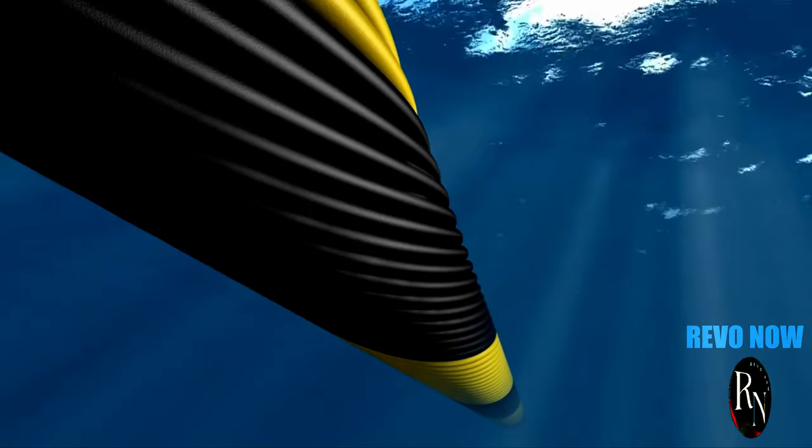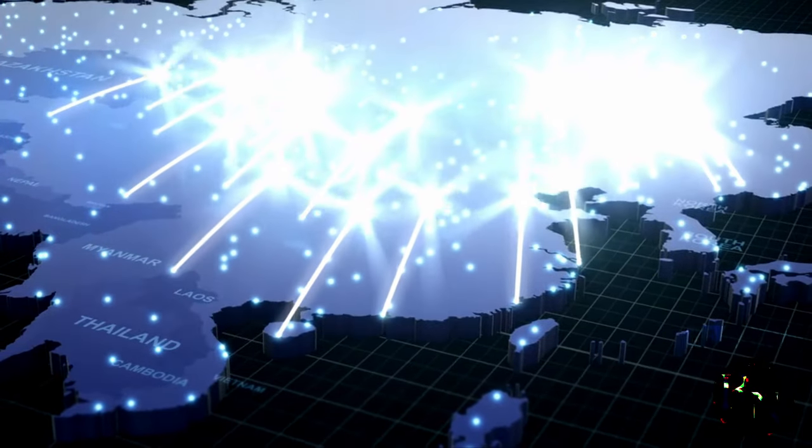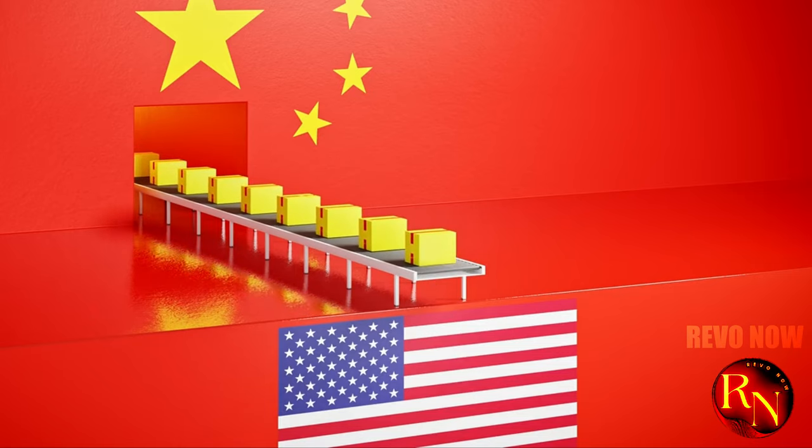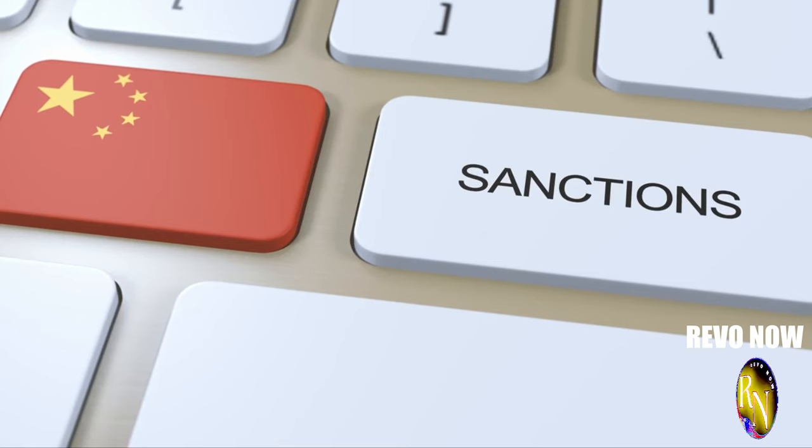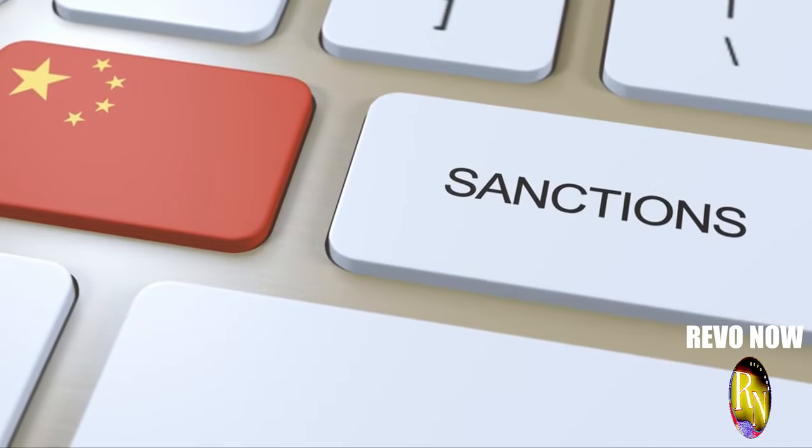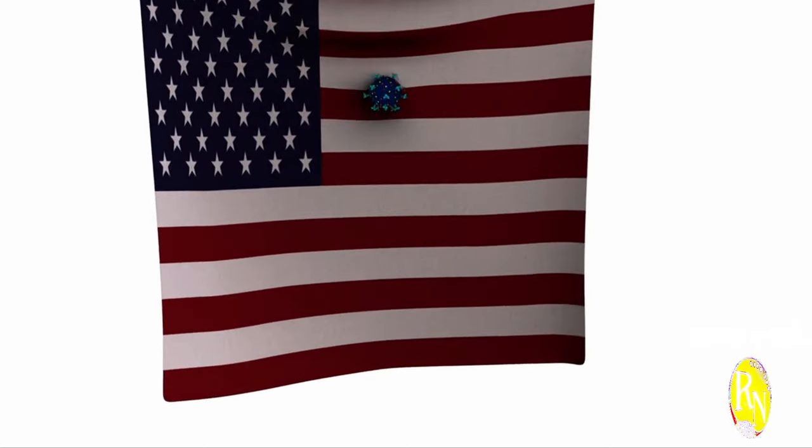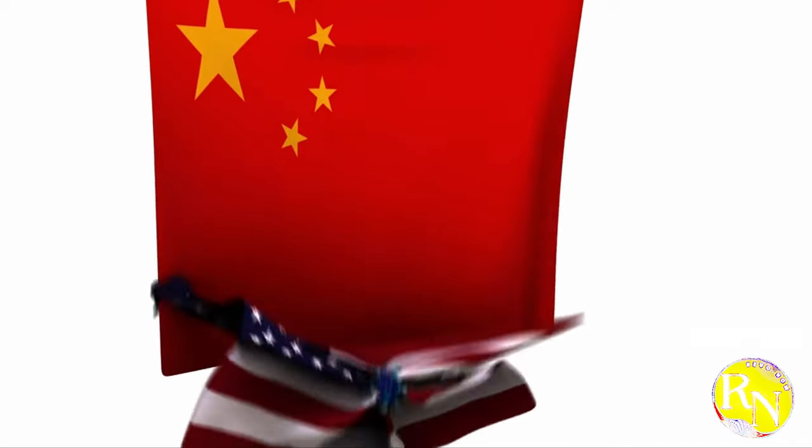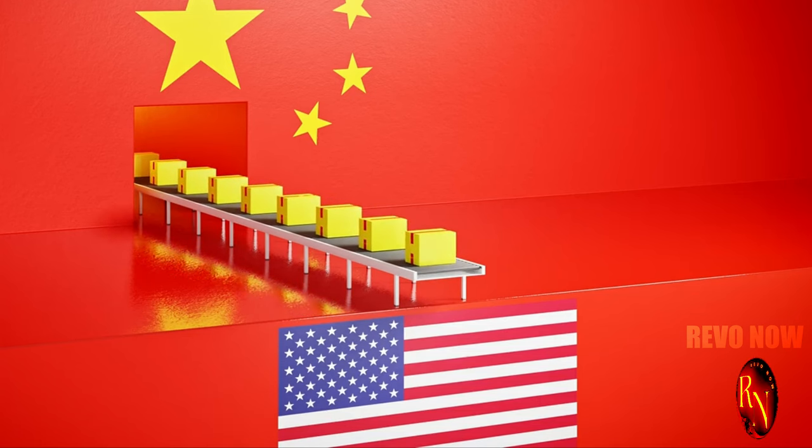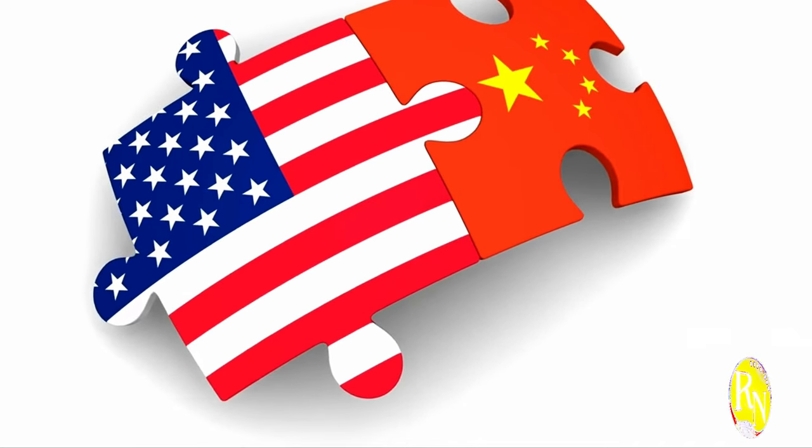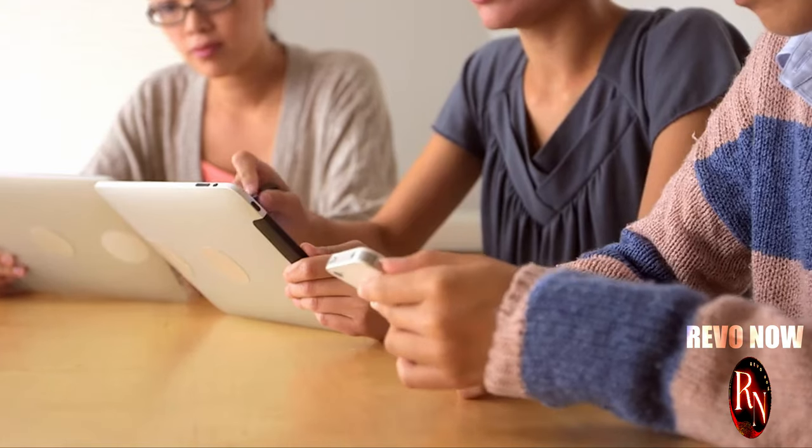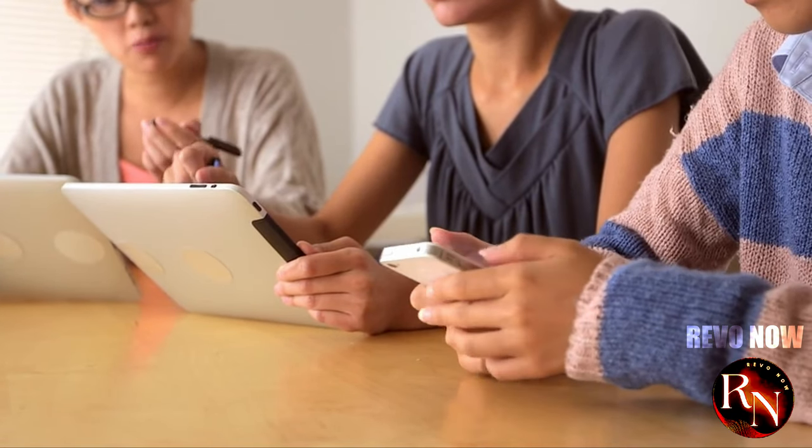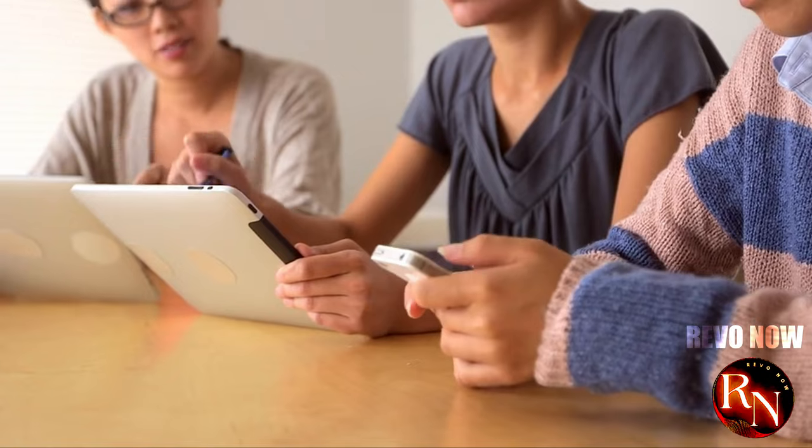These cables, often financed through generous loans, come with strings attached. The United States, wary of China's growing influence, has imposed sanctions on Chinese tech companies involved in cable laying. These sanctions are part of a broader strategy to limit China's reach in the global technology sector. The US government believes that by restricting access to critical infrastructure and technology, they can slow down China's rapid technological advancements. These sanctions aim to curb China's access to critical technology and financing.